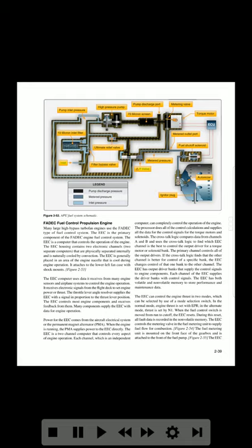FADEC fuel control for a propulsion engine: Many large high-bypass turbofan engines use the FADEC type of fuel control system. The EEC is the primary component of the FADEC engine fuel control system. The EEC is a computer that controls the operation of the engine; its housing contains two electronic channels — two separate computers that are physically separated internally and naturally cooled by convection. The EEC is generally placed in an area of the engine nacelle that is cool during engine operation. The EEC computer uses data received from many engine sensors and airplane systems to control engine operation, and receives electronic signals from the flight deck to set engine power or thrust.